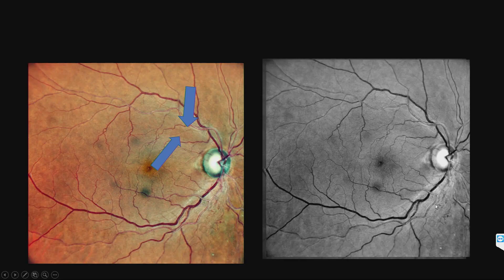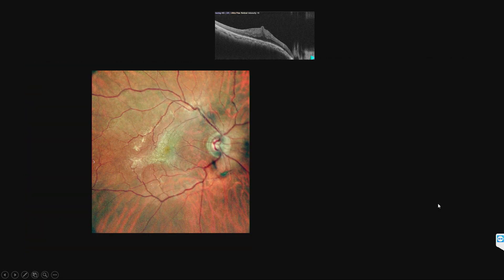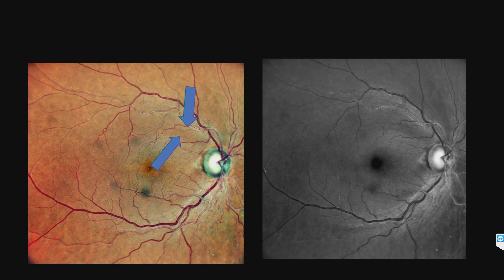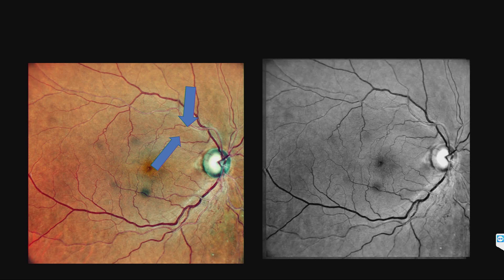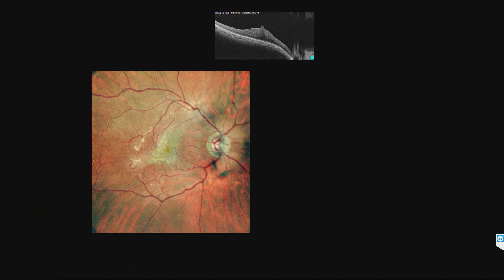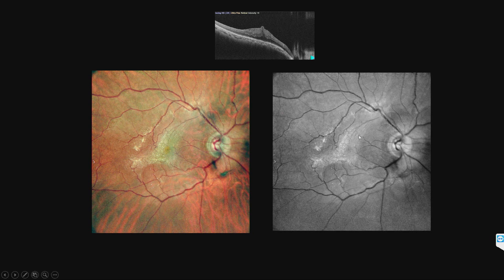A small branch retinal vein occlusion is not seen in the blue reflectance image. The vascular details are more markedly seen in the green reflectance image. The red reflectance image shows more details of the choroidal vessels and RPE. This is the multicolor imaging of an epiretinal membrane — this is the reflectance image.